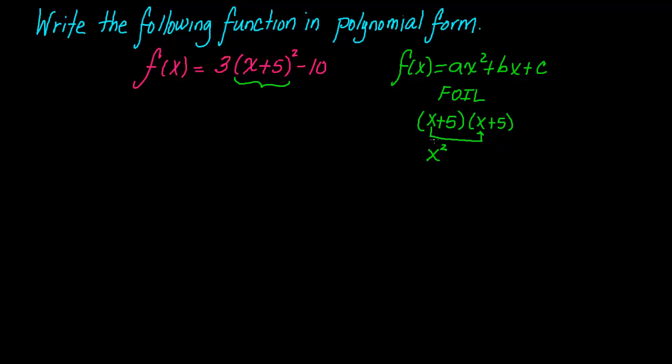You take that same term, and you multiply it with the last, the outer term. So x times 5, that gives you 5x. Now you take your second term here, your inner term, and you multiply it with the other inner term, and that also gives you 5x.